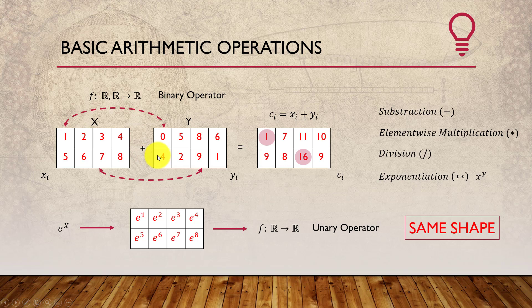There is a mechanism called broadcasting, which we will see in the next video, that allows certain operations even when tensors are not the same shape. But for this video, to apply binary operators, the tensors must be of the same shape.